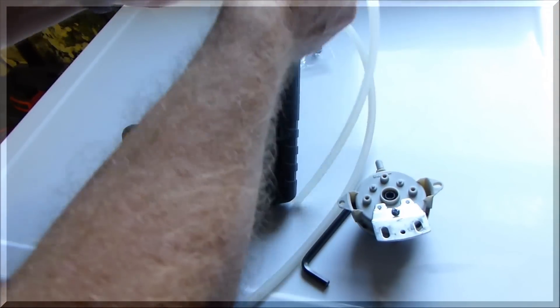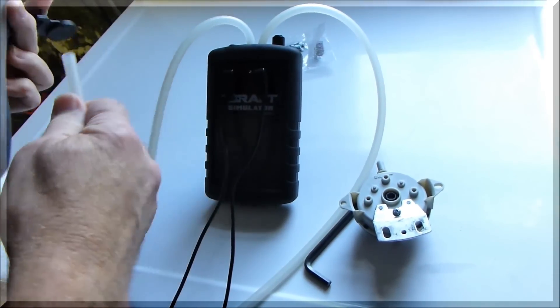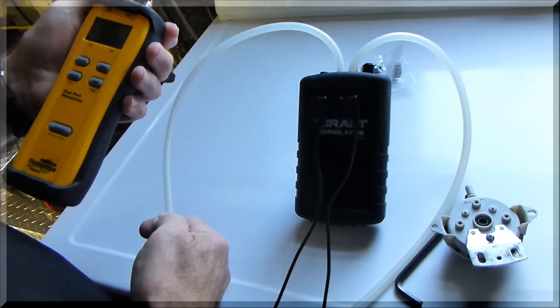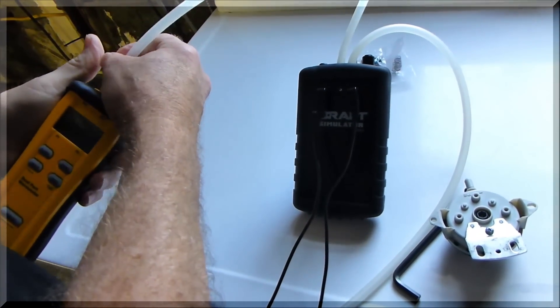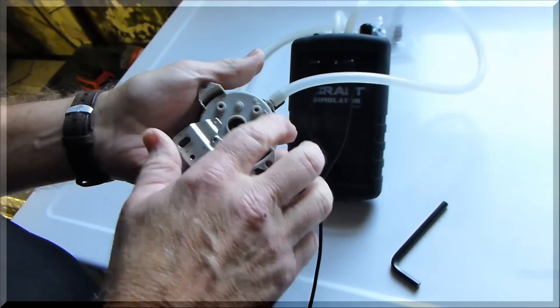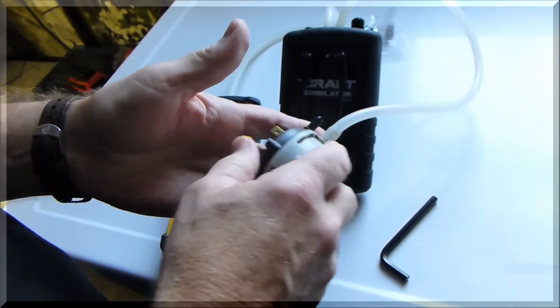Now we're going to take one of the hoses. Because we're using the SDMN5 from FieldPiece, we're going to use the P1 and plug it in. We're going to plug this into the negative side of the pressure switch.